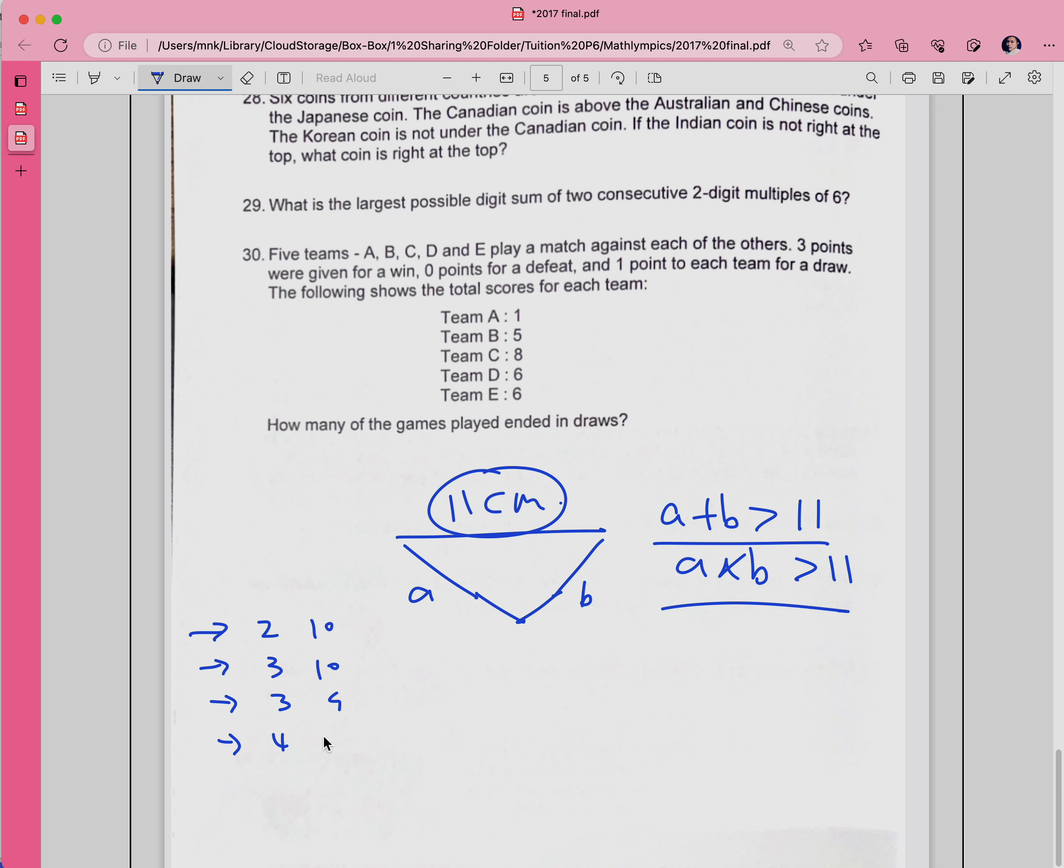So 4 and 10 possible? Yes. 4 and 9 possible? Yes. 4 and 8 possible? Yes. 4 and 7? No. So you start with 5.